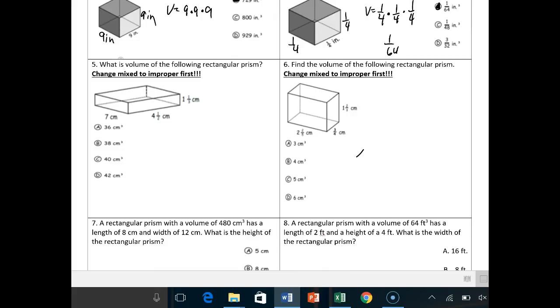On number five, you need to change these mixed numbers to improper fractions. So volume equals length times width times height. Volume equals 7 times four and one-half becomes nine over two times one and one-third becomes four over three. Remember, you have to change mixed numbers to improper fractions before you can multiply them.